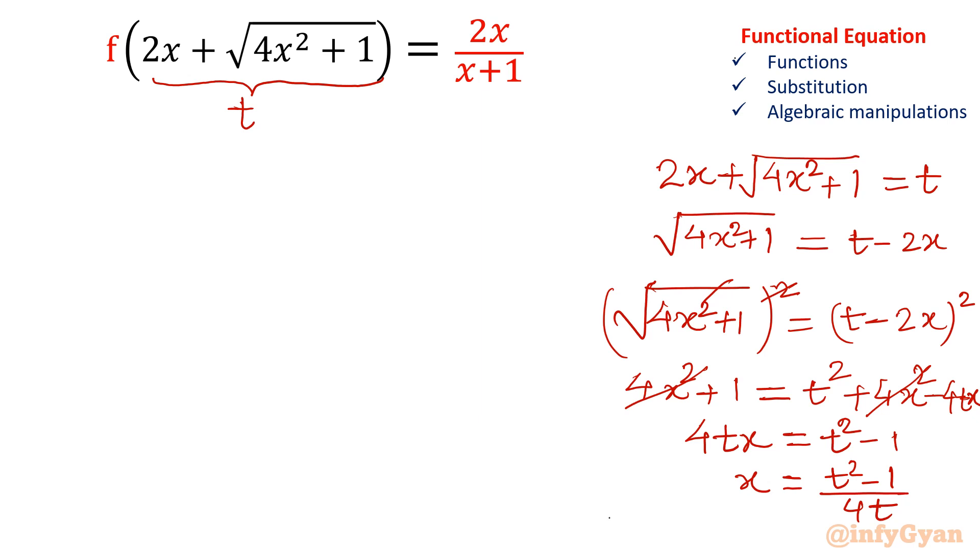If it is not possible then we cannot do like that. So t square minus 1 over 4t will be having. So x is t square minus 1 over 4t. If we are not able to cancel this 4x square from both sides, then this method won't be applicable. So it is only possible because we are capable of cancelling 4x square both sides. So that equation converts into the linear form. And now we can easily write x in terms of t.